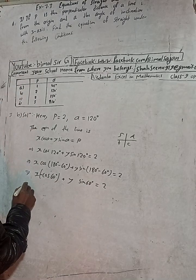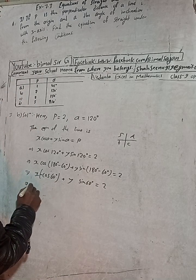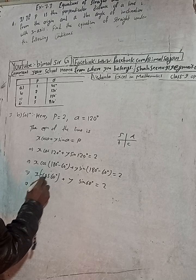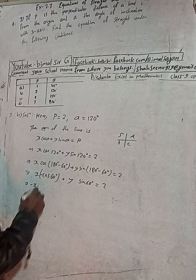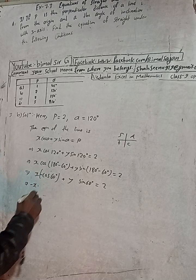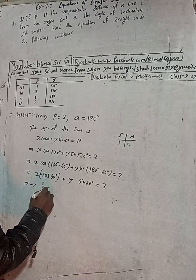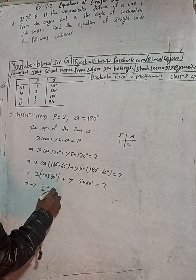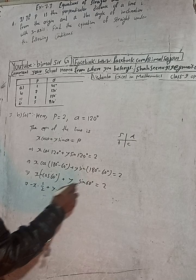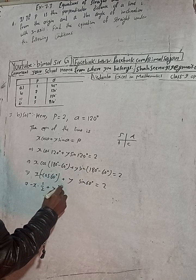This implies: −x·cos 60° + y·sin 60° = 2. Substituting the values: cos 60° = 1/2 and sin 60° = √3/2, we get: −x·(1/2) + y·(√3/2) = 2.